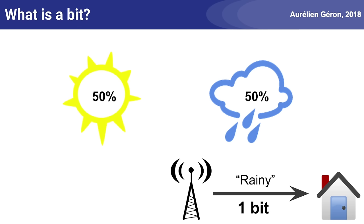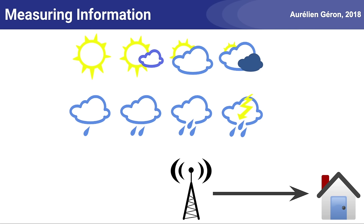If they encoded it as a string with five characters, each encoded on one byte, then they actually sent you a 40-bit message, but they still only communicated one bit of useful information. Now suppose the weather has actually 8 possible states, all equally likely. Now when the weather station gives you tomorrow's weather, they are dividing your uncertainty by a factor of 8, which is 2 to the power of 3. So they sent you 3 bits of useful information.